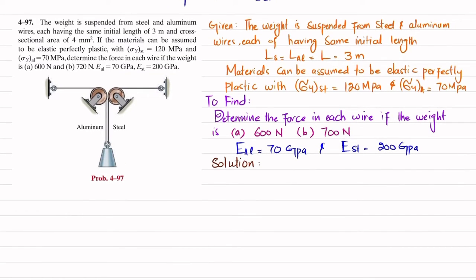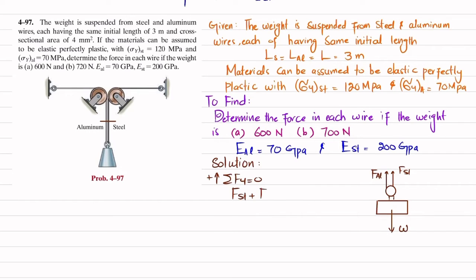Let's start with the solution. We cut the wires and draw the free body diagram. The hook supports the aluminum wire carrying force F_aluminum and the steel wire carrying force F_steel, while weight W acts downward. Applying equilibrium: the sum of all forces in the y-direction equals zero (upward positive), giving us F_steel + F_aluminum − W = 0. This is Equation 1.